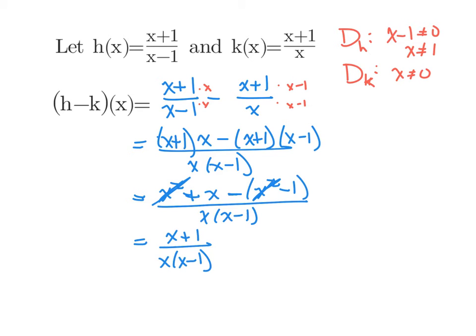And I'm cool if you leave it factored like that. If you wanted to multiply out the denominator, that's fine. But what we can tell by looking at it in this form is that the domain of h-k, again, we have another rational expression. Its denominator can't equal 0. So x times (x-1) can't equal 0, which means x can't be 0 and x can't be 1, which when we look back up at the top, that's what our two domains were before. So now that I'm taking the difference of two functions, I'm taking their domains with them.